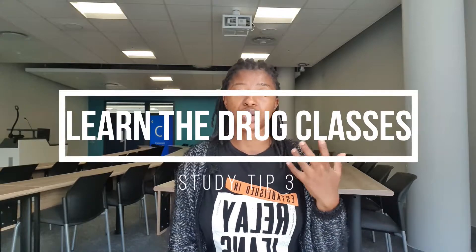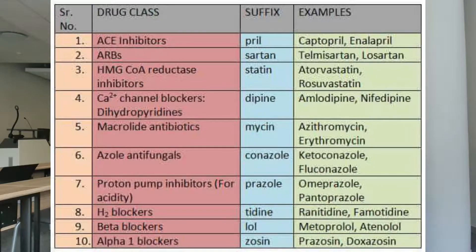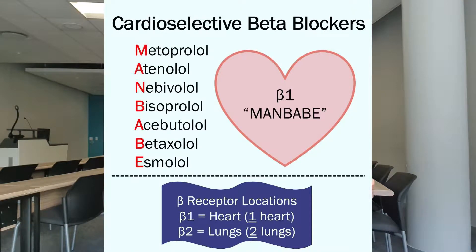Third tip: learn your drugs in their classes or groupings rather than trying to learn each individual drug. A group of drugs will have a similar mechanism of action, similar indications, and similar side effects. Drug classes usually share naming similarities — for example, antibiotics ending in '-ectum' are grouped together, and beta blockers ending in '-olol' are grouped together. If you learn by class, you can learn five drugs at once because they have the same suffix and similar side effects.